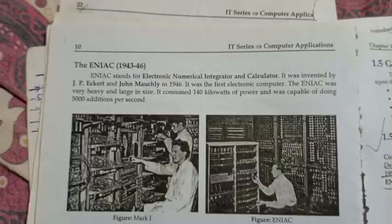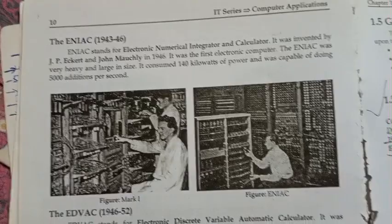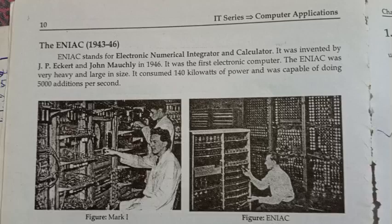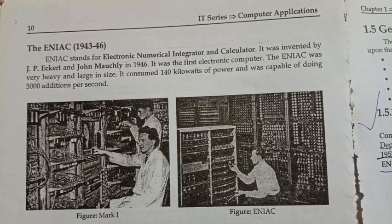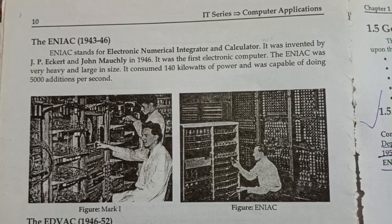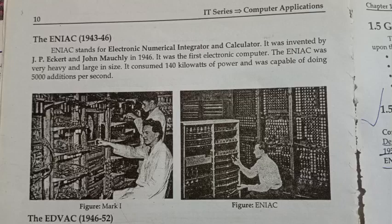The ENIAC, developed from 1943 to 1946, stands for Electronic Numerical Integrator and Calculator. It was invented by J. Presper Eckert and John Mauchly in 1946. It was the first electronic computer, very heavy and large in size. It consumed 40 kilowatts of power and was capable of doing 5,000 additions per second.